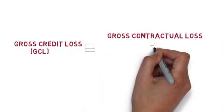This becomes part of the gross bankruptcy losses. So the total gross credit loss, which is also called GCL, is the sum of the contractual losses and the bankruptcy losses.